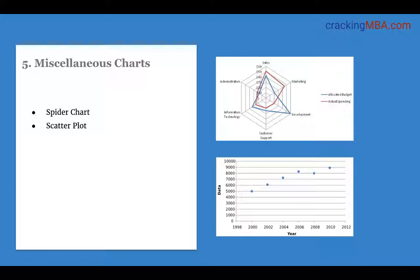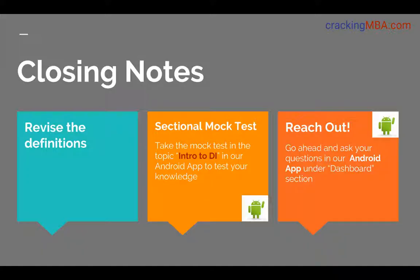Let's now look at miscellaneous charts. Some of the other charts that you can also find are spider charts and scatter plots. Due to paucity of time we will not go into depth of these two charts, but we will definitely cover them in subsequent sessions. On the closing note, revise the definition of each type of chart and what data they represent. Take the mock sectional test titled Intro to DI in the Android app to test your knowledge, and reach out to us if you have any questions in the dashboard section of our Android app. Thank you.